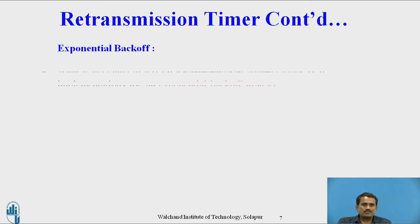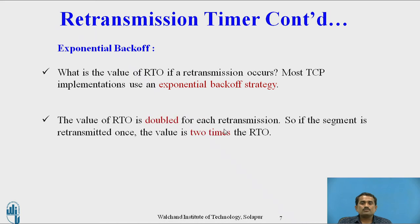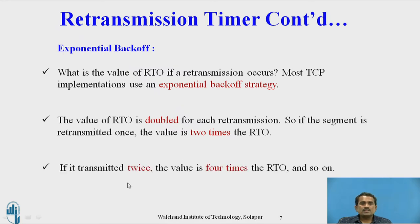Regarding the exponential backoff algorithm: what is the value of RTO if retransmission occurs? Most TCP implementations use an exponential backoff algorithm, meaning the value of RTO is doubled for each retransmission. If the segment is retransmitted once, the value is 2 times RTO. If transmitted twice, the value is 4 times the RTO, and so on. Based on this, we use the exponential backoff algorithm.